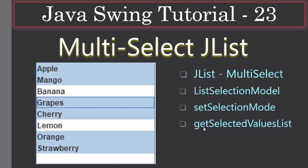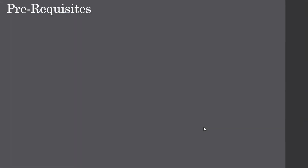Now we will change the JList to a multi-select list. In the left-hand side feature you can see we selected multiple items — only banana and lemon are not selected, all other items are selected. We will learn about ListSelectionModel, setSelectionMode, and getSelectedValuesList, which returns all selected items.